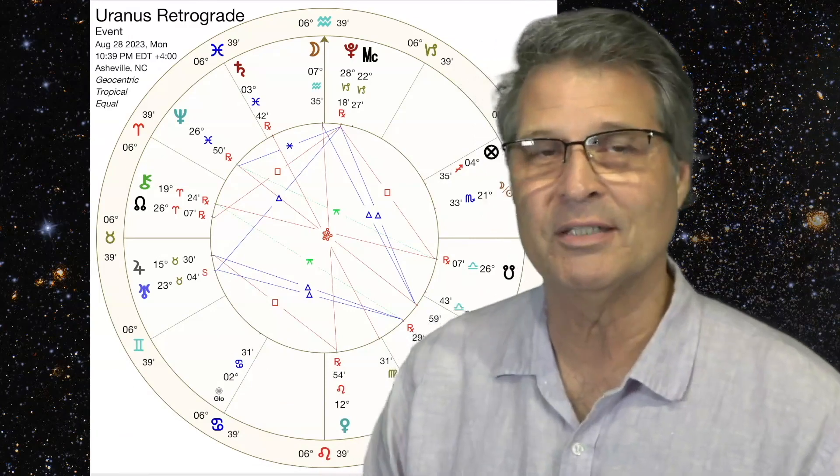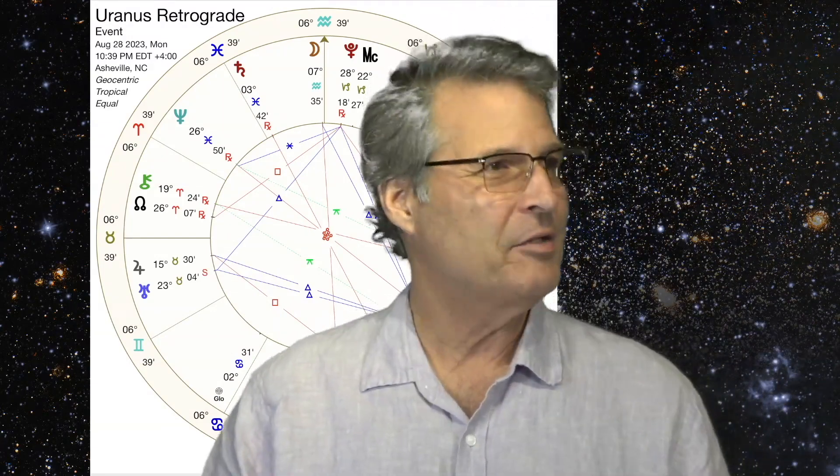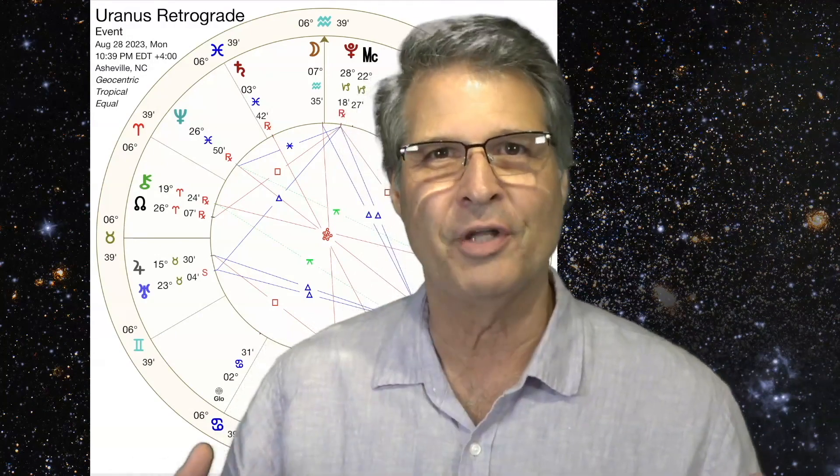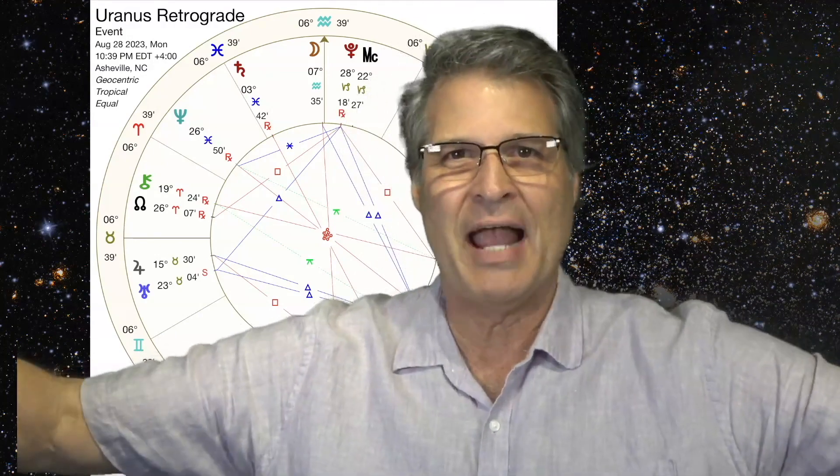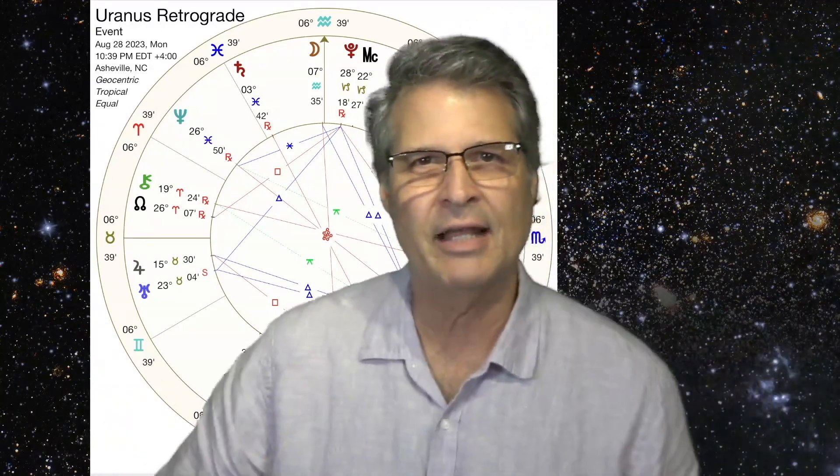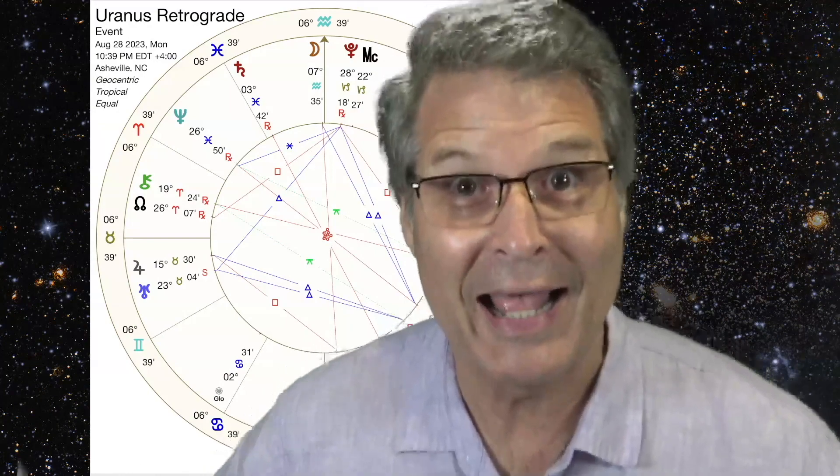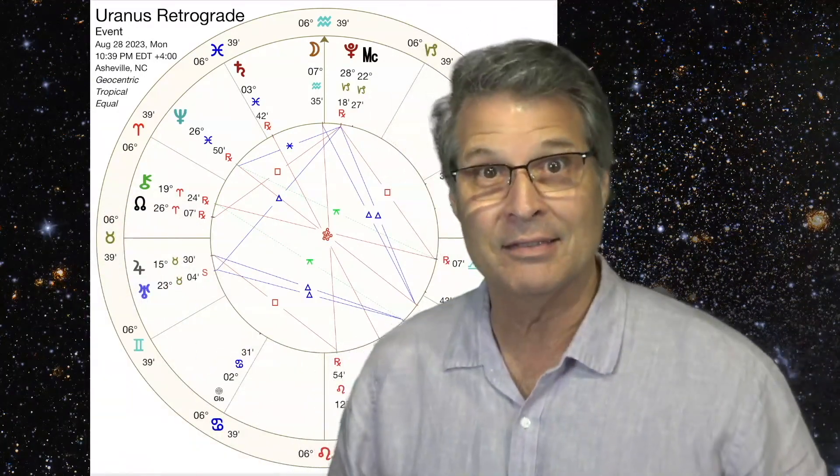Now, Uranus represents a couple of things in astrology. For one, I like to think of, if you had a cartoon image of a great big jack-in-the-box thing, from the carnival days. And let's say that that jack-in-the-box goes, boing, surprise. Well, that's kind of Uranus. It's the things, the sudden shock and awe that we're not expecting.